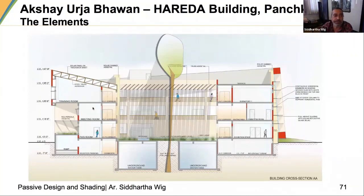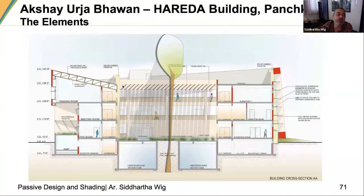The roof of the multi-purpose hall was inclined to allow solar panels to be put directly on it. There was also BiPV placed above the courtyard.